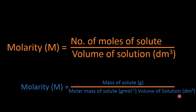In simpler form, number of moles of solute means mass of solute in grams divided by molar mass of solute, with the volume of solution in decimeter cube in the denominator. We get the molar mass from the periodic table, and the volume of solution will be one decimeter cube. In this way we can get the molarity of any solution.